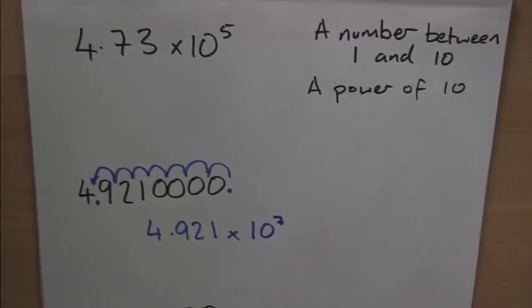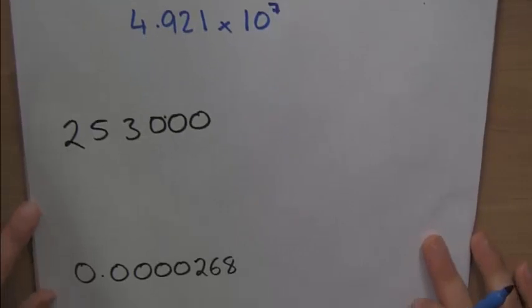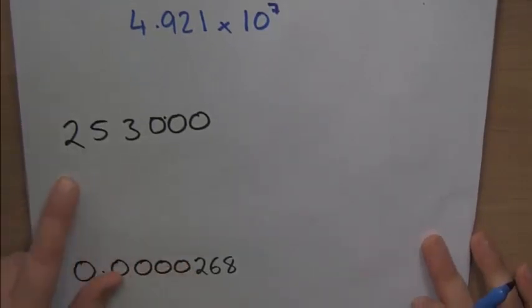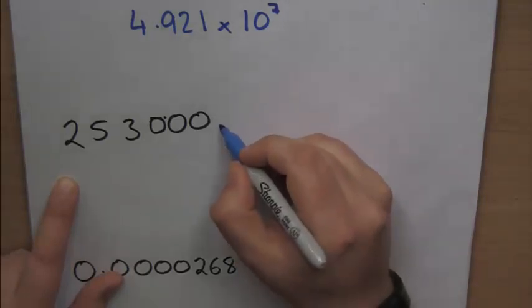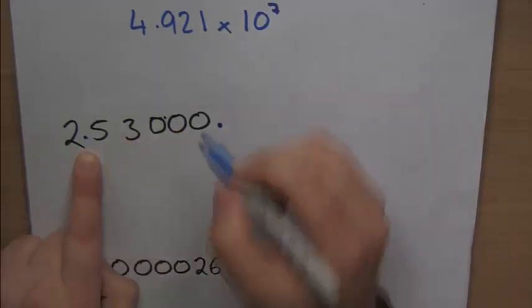Let's have a look at another example here. So here I've got 253,000. So, first things first, put the decimal point in. And I want it to be between the 2 and the 5 to make it a number between 1 and 10.